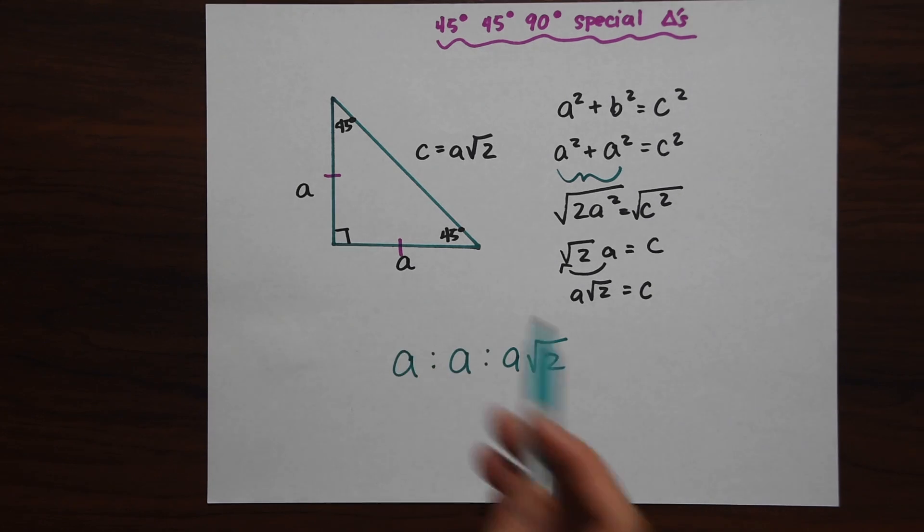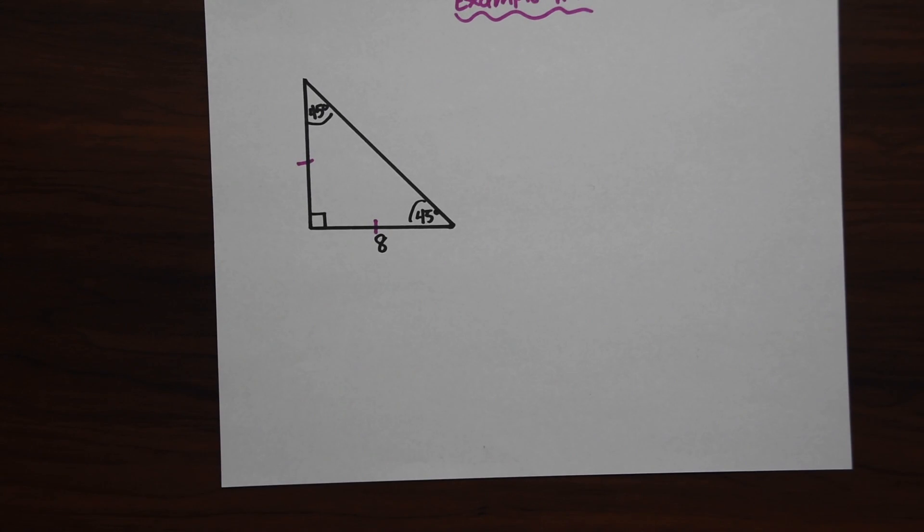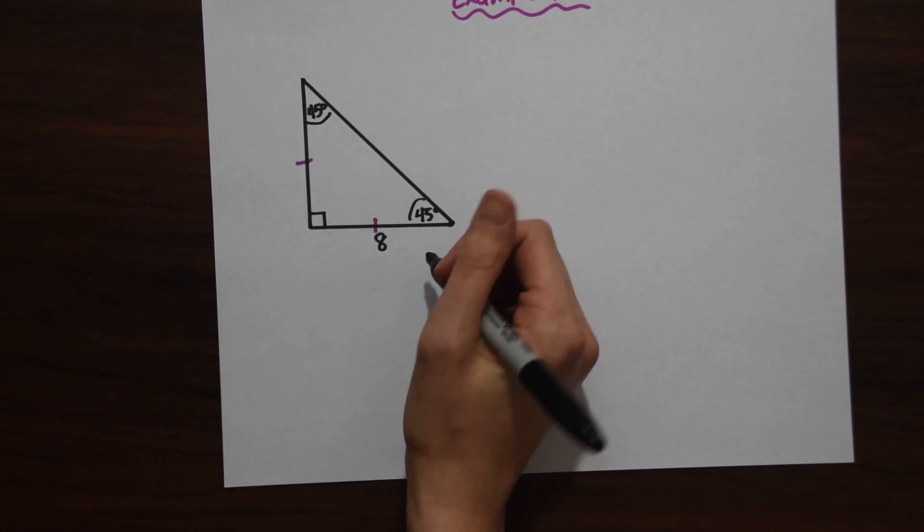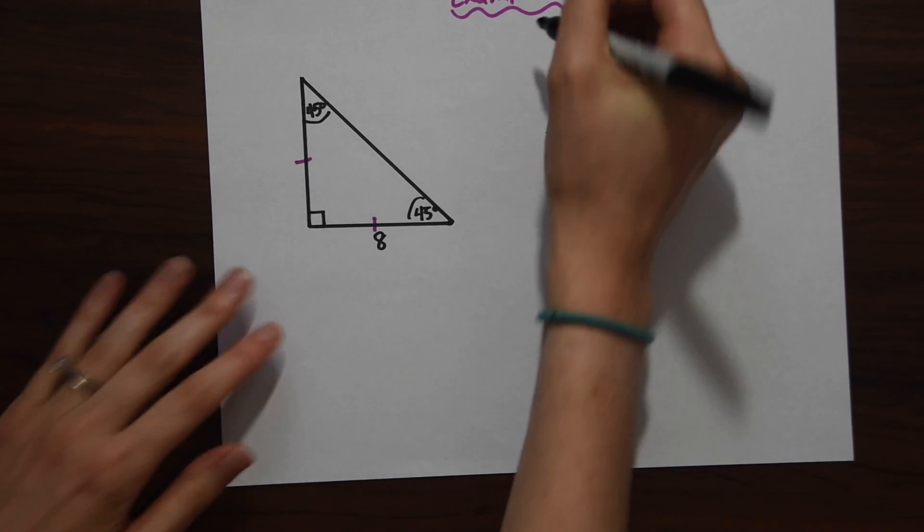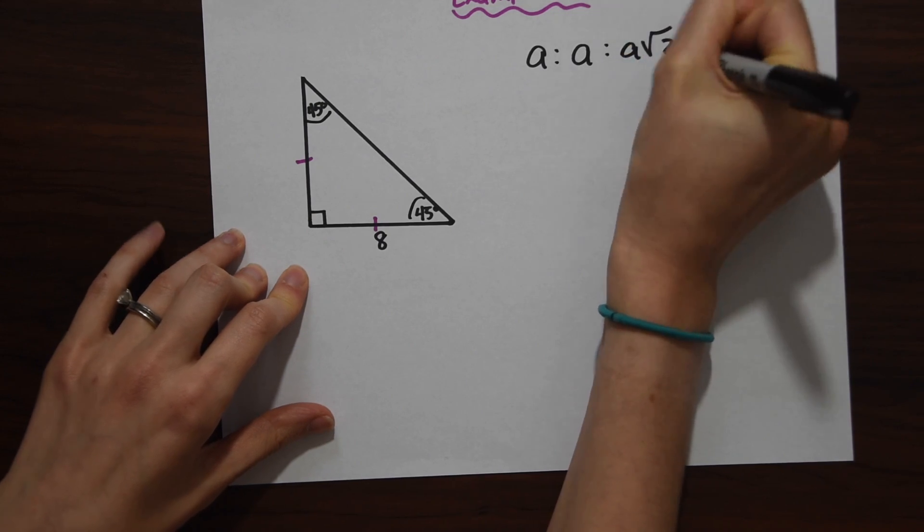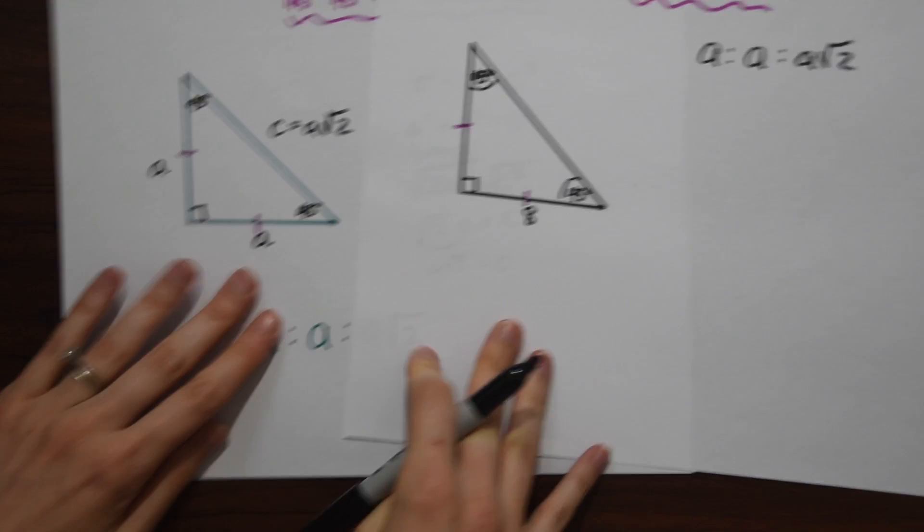Let's look at our example. You need to find the value of the missing sides of the following 45-45-90 degree triangle, and we're given one of its lengths, the side a. If we remember our ratio, it's a to a to a radical 2, and we could look at this on the side while we're solving this problem to make our lives easier.